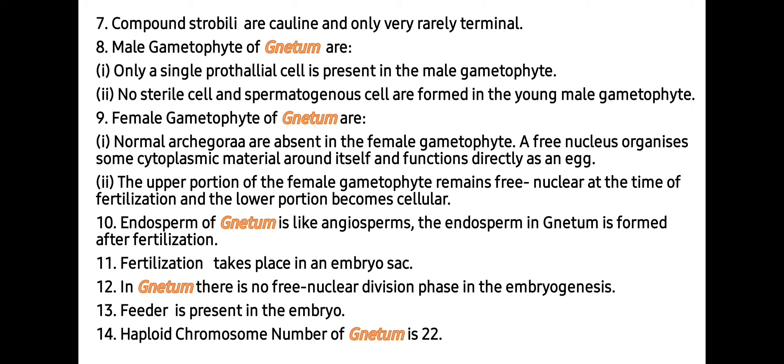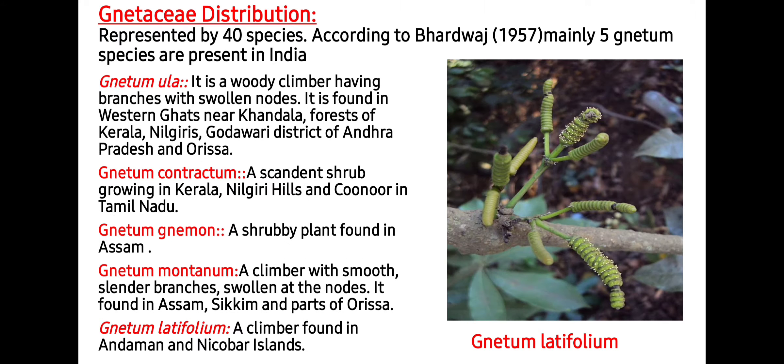Fertilization takes place in an embryo sac. In Gnetum, there is no free nuclear division phase in embryogenesis. A feeder is present in the embryo — as the name indicates, the feeder is a tissue which helps the embryo to uptake nutrients. The haploid chromosome number of Gnetum is 22. Let's understand these characters in detail.